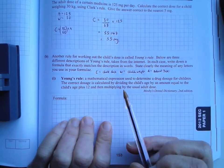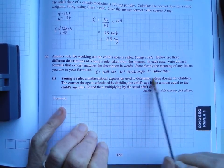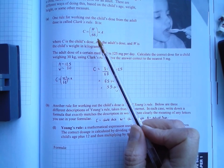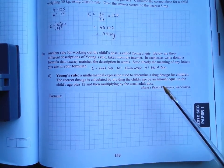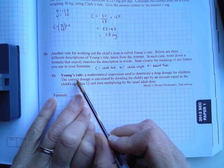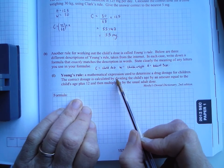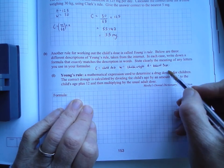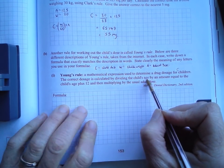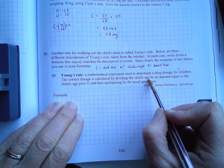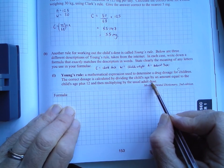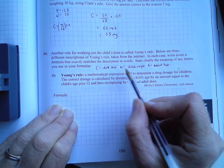So what we're going to do now is we're going to try and translate this English language into a formula that looks something like this one up here. So we're trying to get the words here into a formula. So a mathematical expression used to determine a dosage for children. The correct dosage is calculated. So nothing there yet. I suppose, the drug dosage for children, that would be C. The correct dosage is calculated by dividing the child's age. Now, that's a new thing. By an amount equal to the child's age plus 12. And then multiplying by the usual adult dose. So we don't need the weight one here.